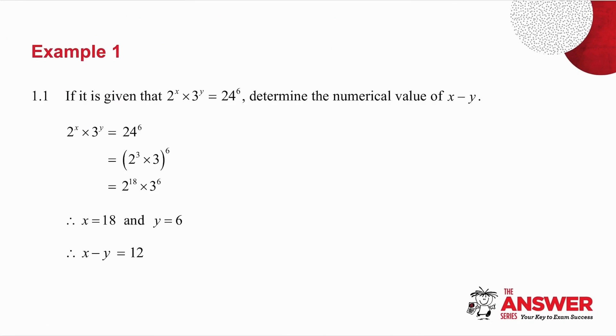The first one, they've told you that 2 to the x times 3 to the y is 24 to the 6. The first thing I do is I think 24 is 8 times 3. 8 is 2 cubed. So I can write 24 as 2 cubed times 3. This 6 belongs to both of these bases. And remember, I multiply the indices, so it becomes 2 to the 18 times 3 to the 6.